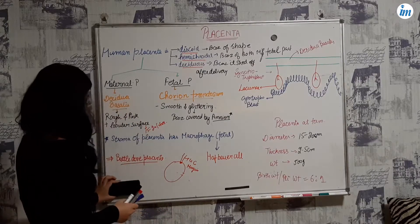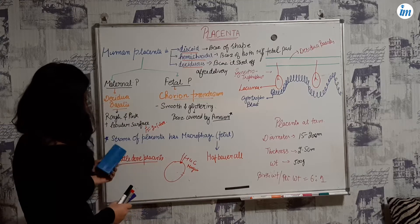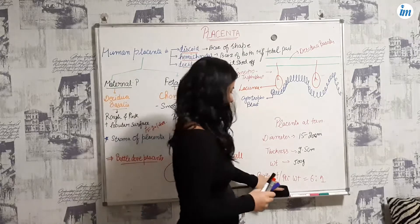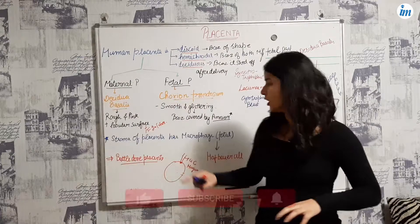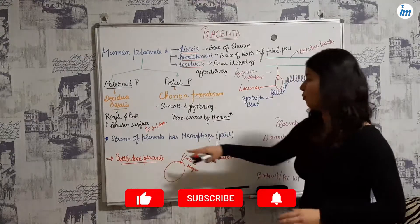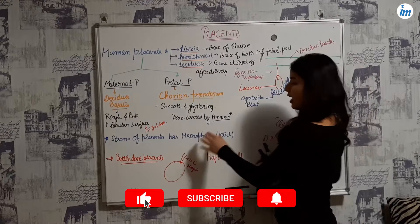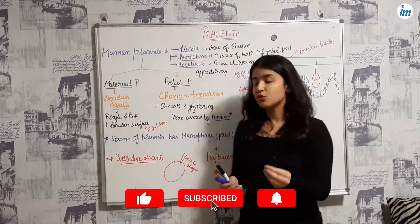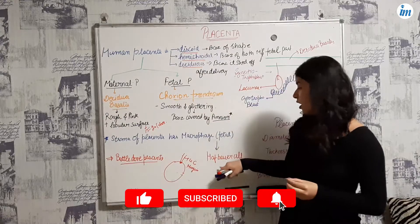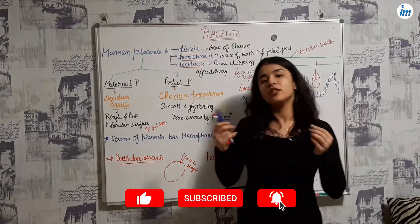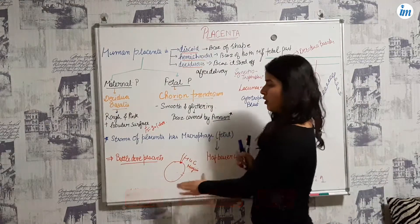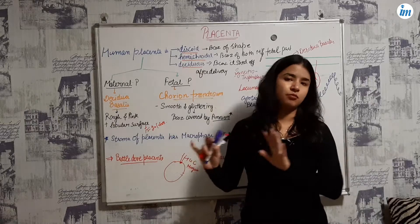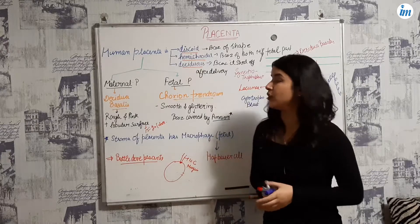The stroma of the placenta has fetal macrophages, which are also known as Hofbauer cells. Just remember: the stroma of placenta has fetal macrophages called Hofbauer cells.